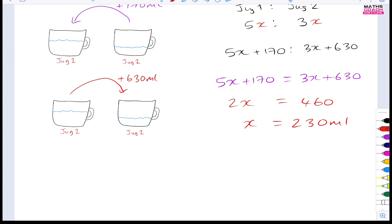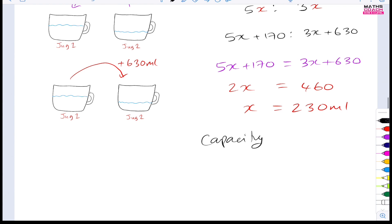Now we have found the value of x. So x is obviously this value here and this value here, but we are not interested in x when it's over here because this was part full. We are interested in x right here. We're going to substitute the value of x in here and we're going to find the maximum capacity. So we can use any of these two equations because both of them represent the maximum capacity. Let's just use the 5x plus 170. So 5 times 230 plus 170, and that will give us the capacity. So that is 1320 milliliters.